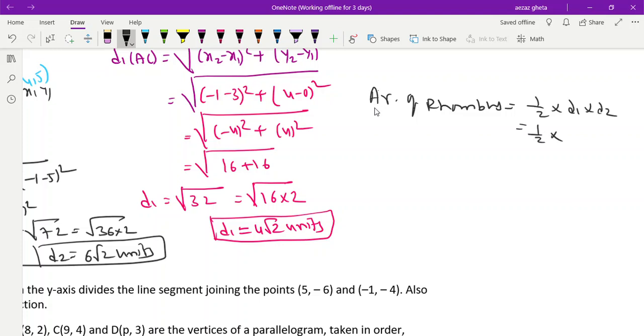Diagonal 1 is 4√2 we got, correct? Can you get the answer? And 6√2 is diagonal 2. 2 into 6 is 12, √2 × √2 = √4. 12 × √4, and √4 is 2. Answer is 24 square units.